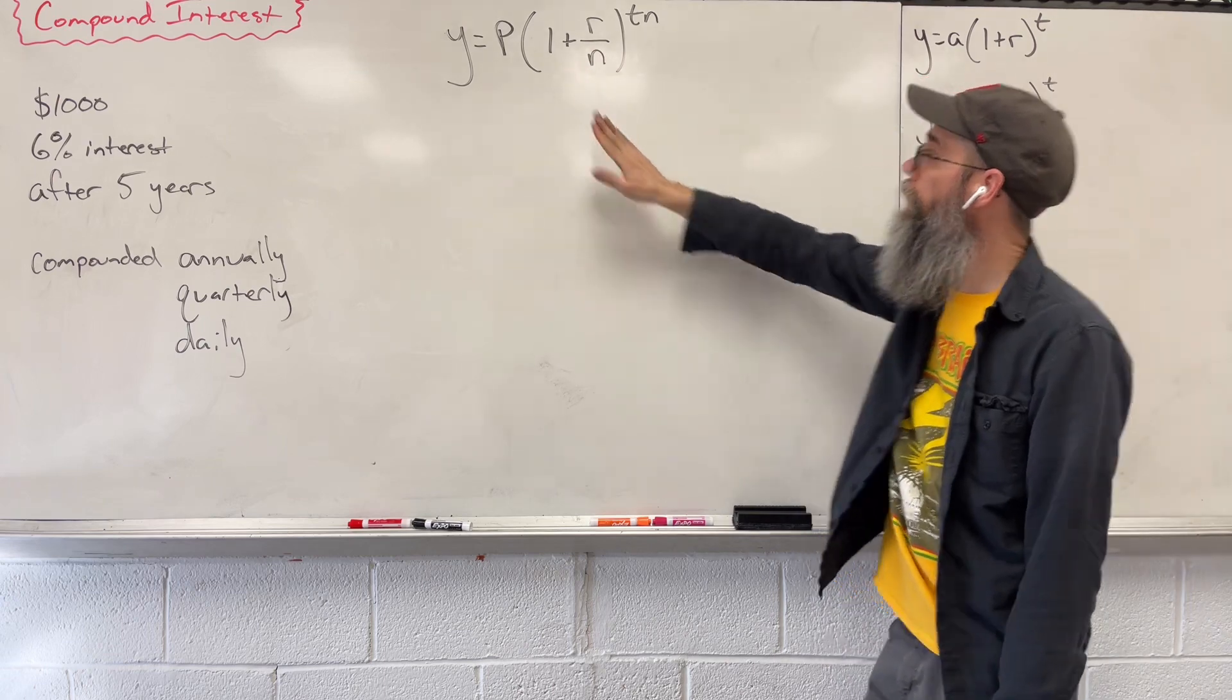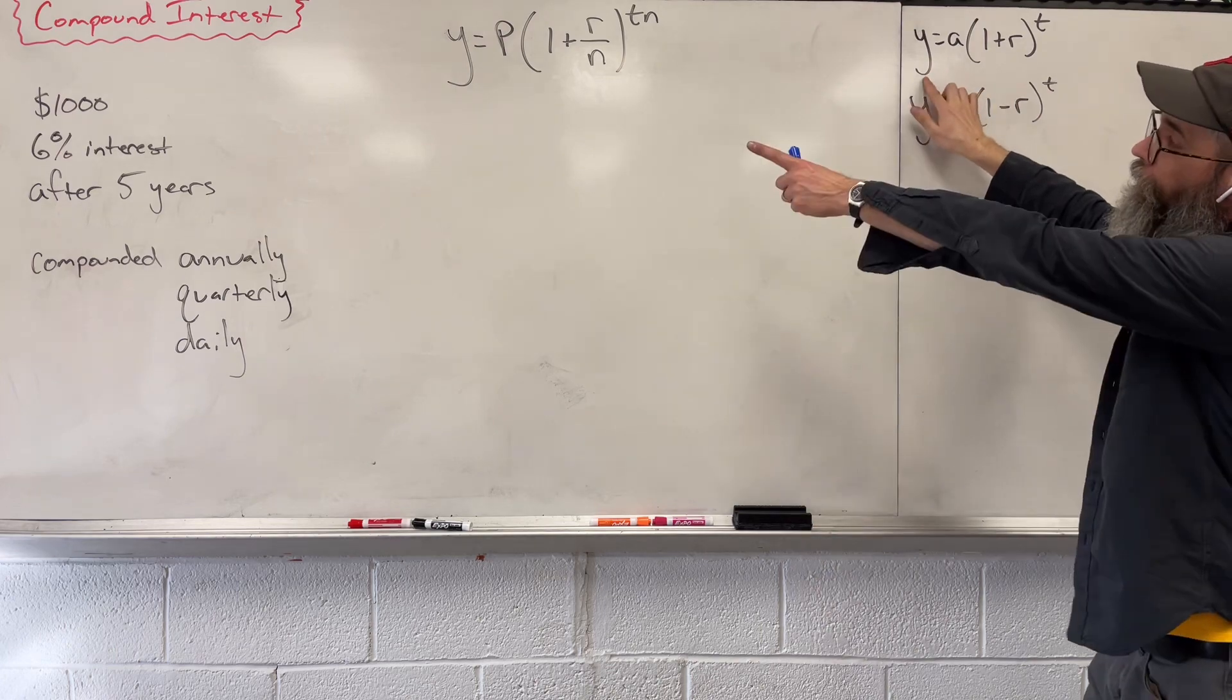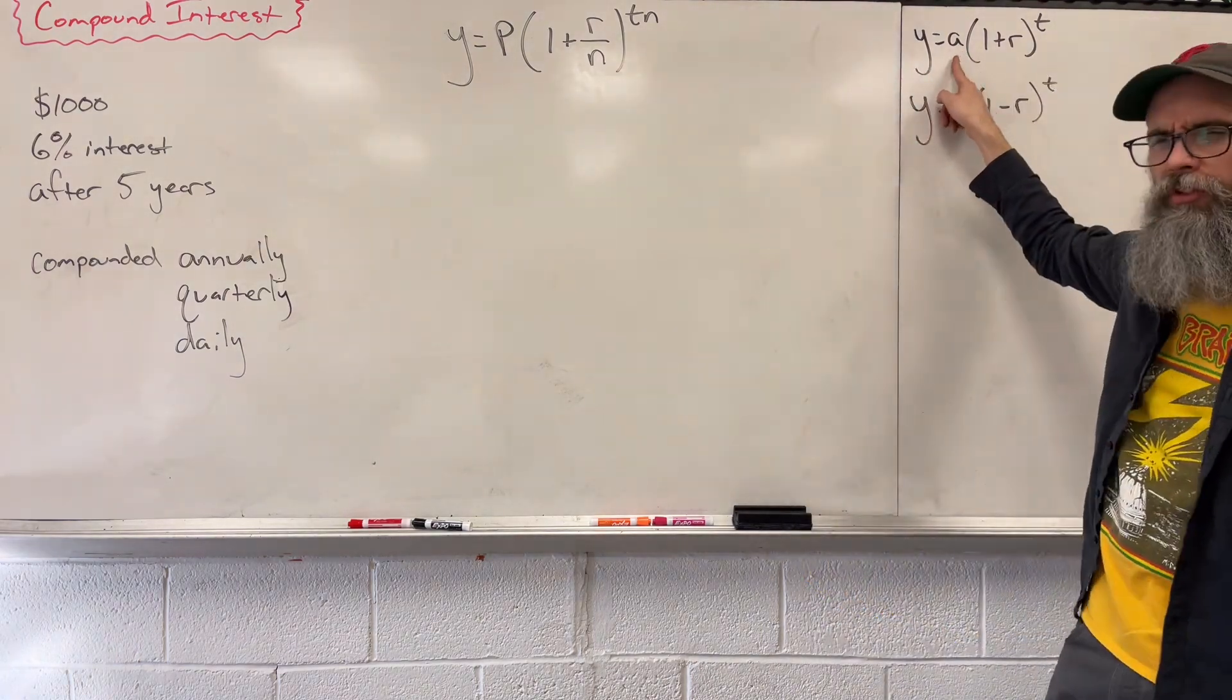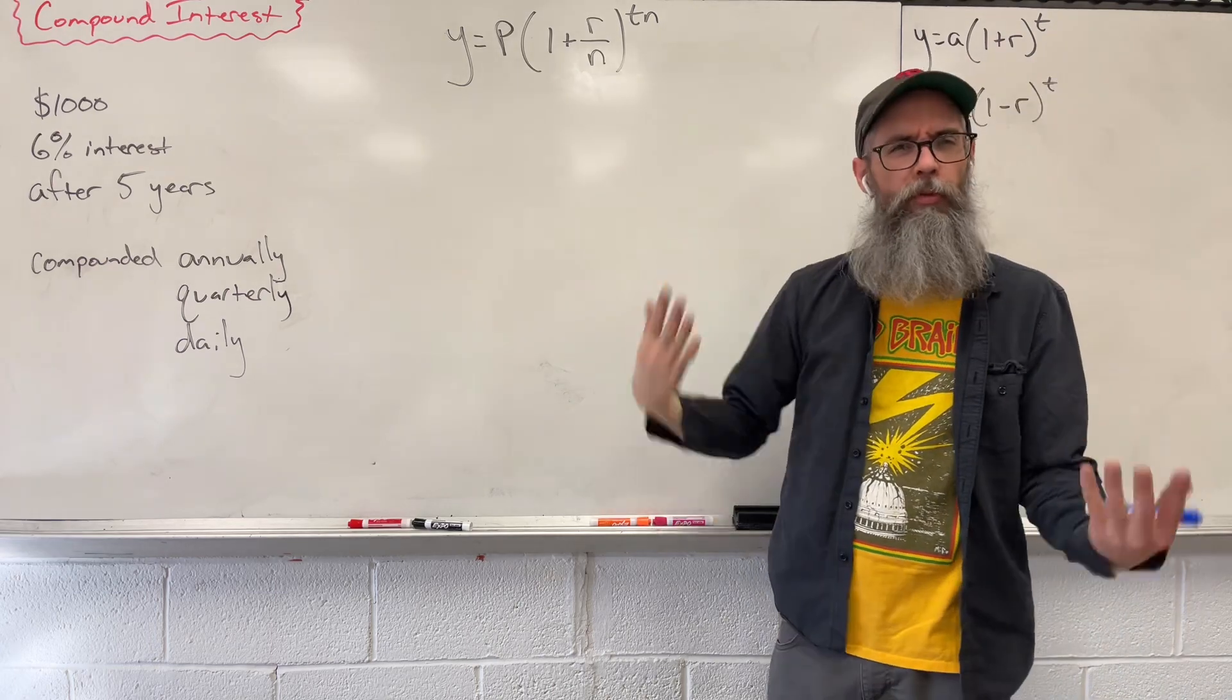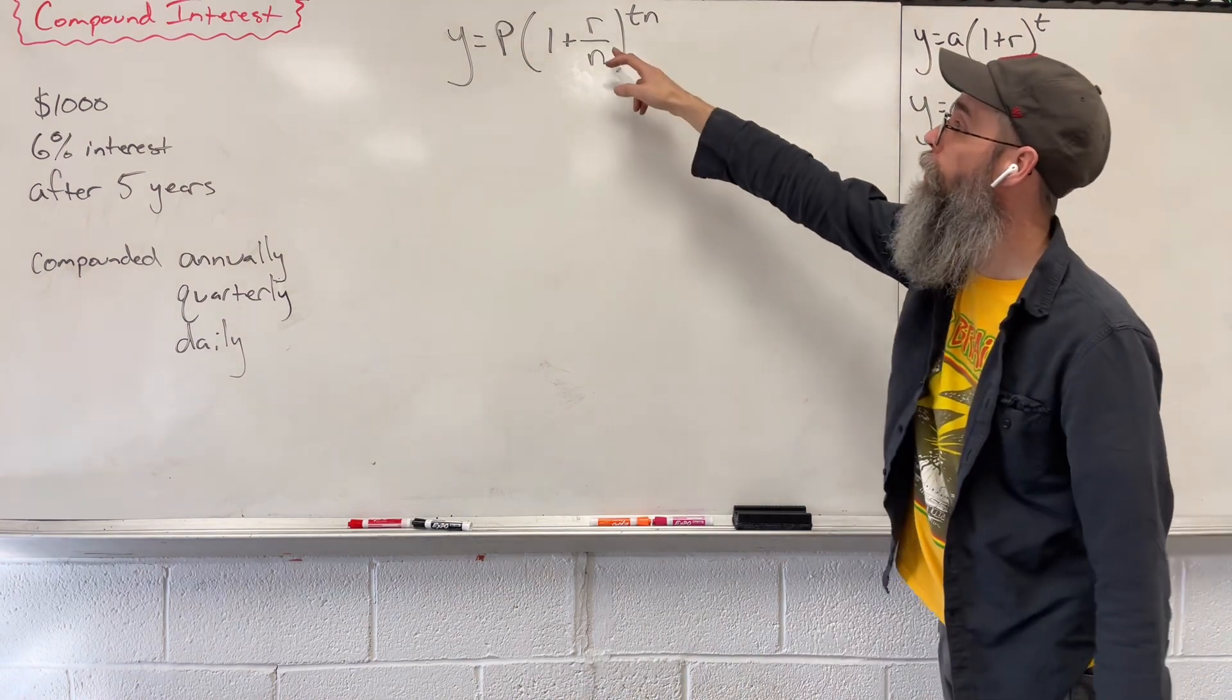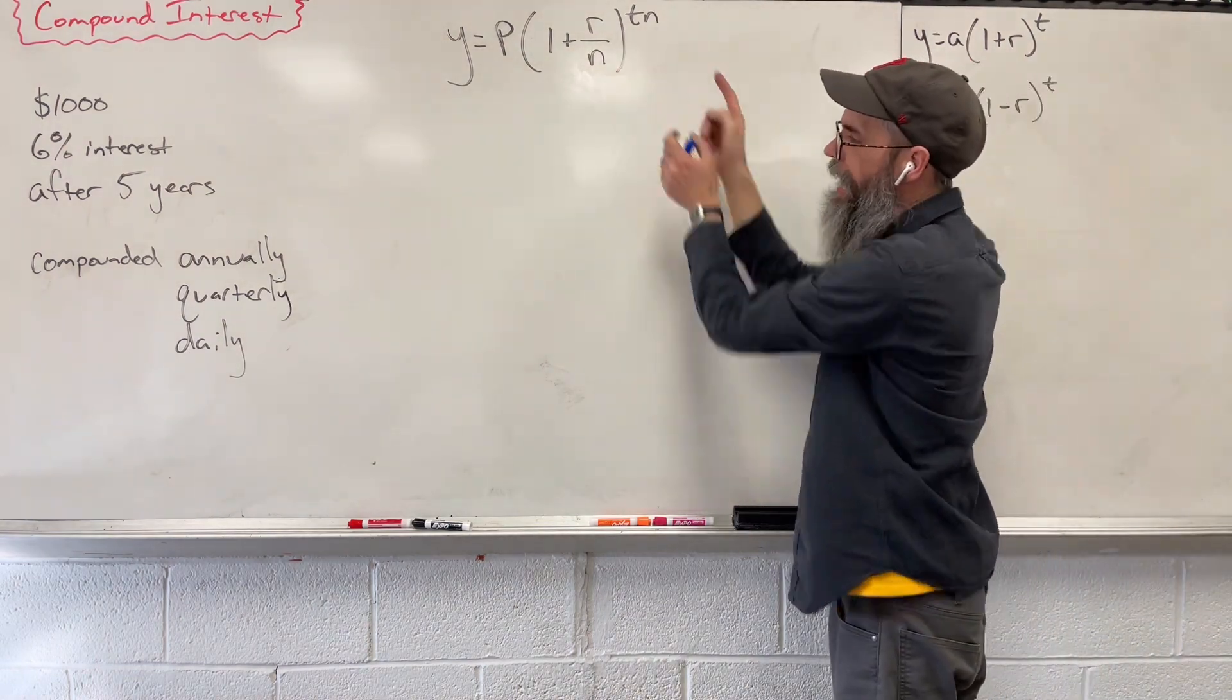So let's compare this with our top formula here for exponential growth. Notice that they both say y equals. This has an A, that has a P. We said this was our starting point. P means our principal amount or what we start with. So they both mean the same thing. We got one plus, we got one plus, we got an R, we got an R. T and T, the only difference is we've got these Ns.